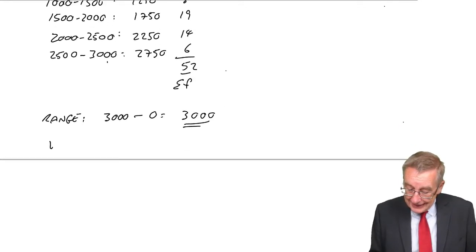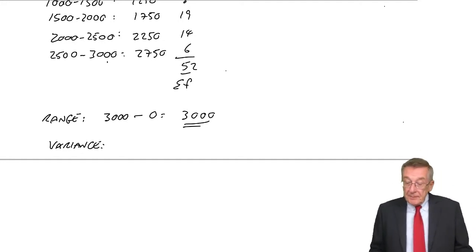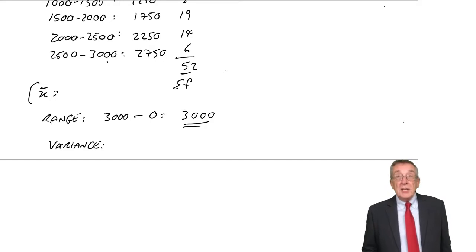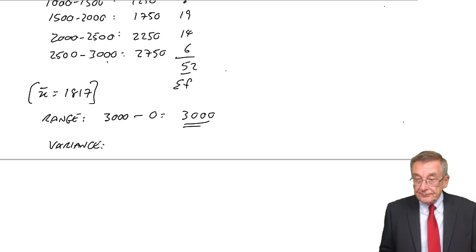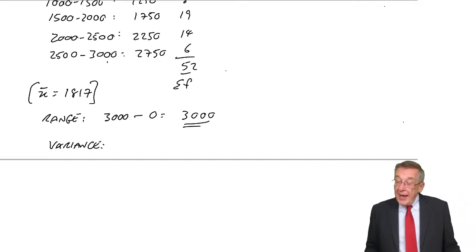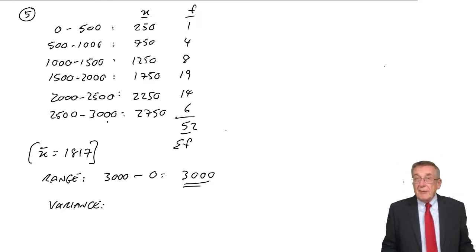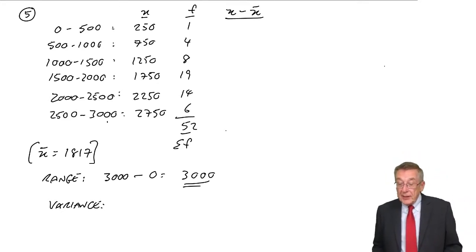And so much more important, the variance. Well, we do exactly the same as we did in the previous example. Remember, we had worked out earlier, when I went through example three before, we'd worked out the arithmetic mean, or x-bar. It was 1,817.